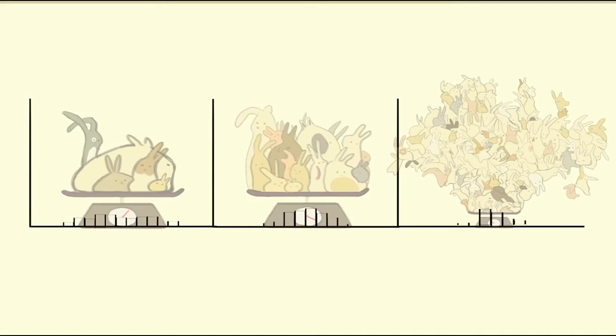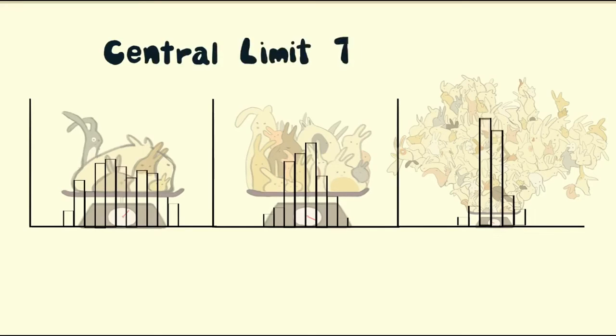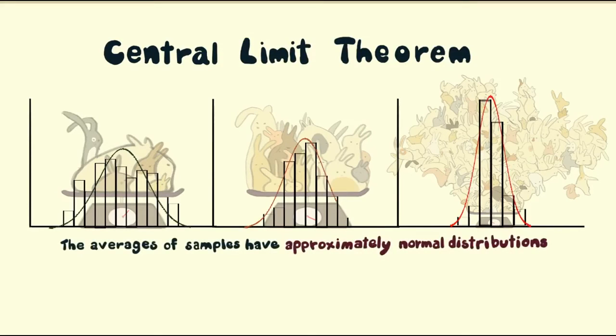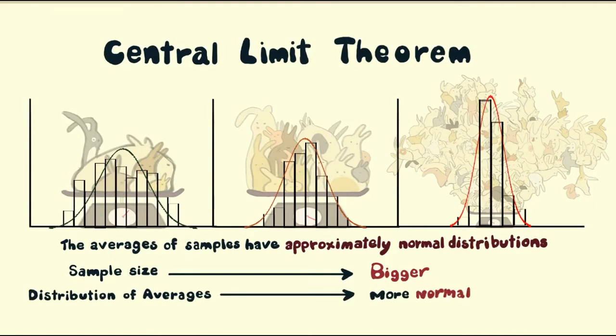What our brave ecologist has just demonstrated is the Central Limit Theorem. The averages of samples have approximately normal distributions. If the sample size increases, this distribution of averages becomes more normal and narrower.